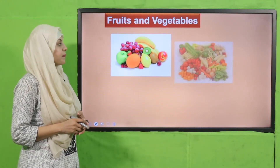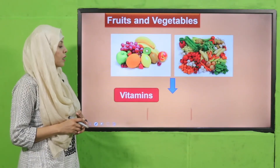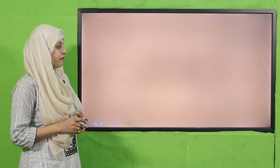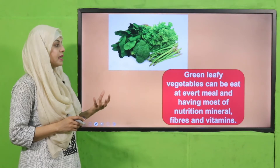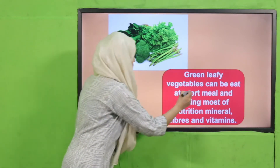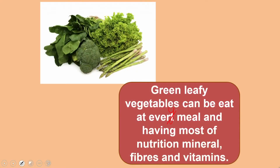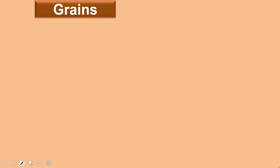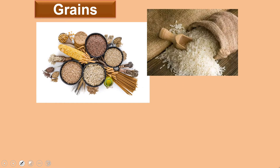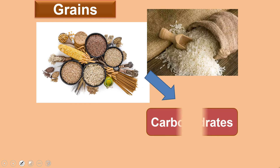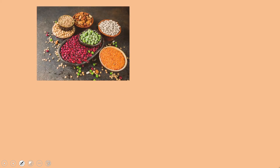Fruits and vegetables are rich in vitamins, minerals, and fibers. Then come leafy green vegetables — they can be eaten at every meal and are very rich in minerals and vitamins. Next come grains: grains include wheat, barley, and rice, and they are rich in carbohydrates and provide us with energy.